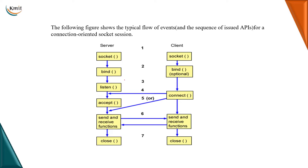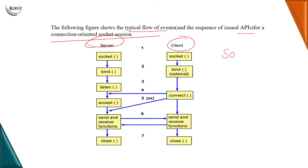Let us see the typical flow of events using the APIs for a connection-oriented socket session. We have a client-server connection where both the client and the server make use of a function from the API called the socket function, which is used to create a socket. A socket is an end point for communication — an end point at the client side and an end point at the server side.